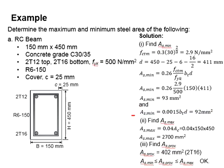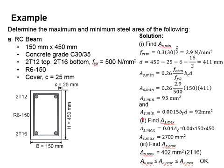Next, you deal with AS maximum. AS maximum is determined by 4% of the cross-sectional area, which is 0.04 times the width of the beam (150) times the height of the beam (450). The AS maximum will be 2,700 mm².